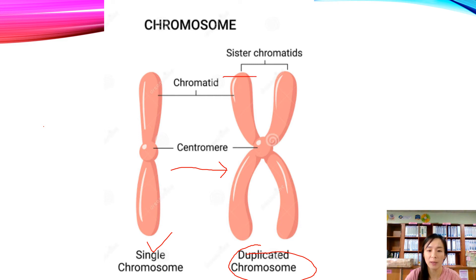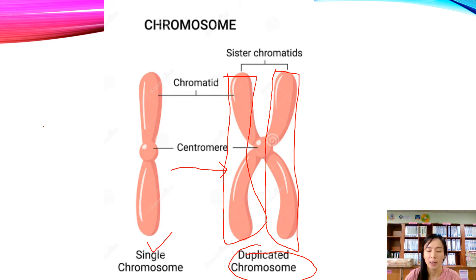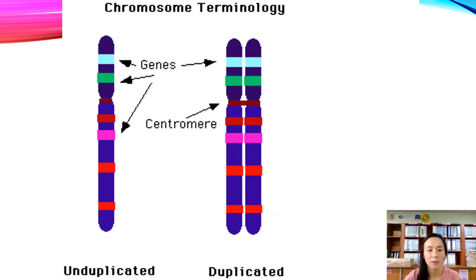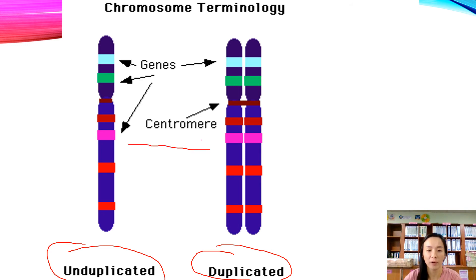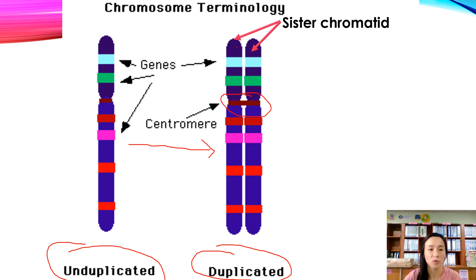A duplicated chromosome is made up of two chromatids. This is one chromatid and this is another chromatid — two sister chromatids joined at the centromere. Another diagram shows an unduplicated chromosome compared to a duplicated chromosome. When a chromosome undergoes replication, it forms a duplicated chromosome consisting of two sister chromatids joined at the centromere.